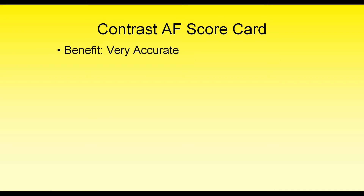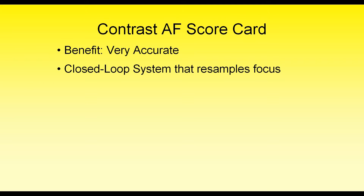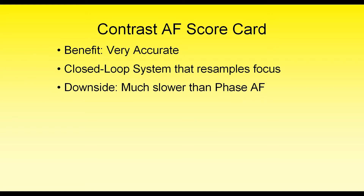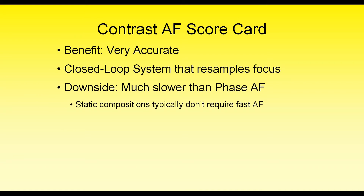With contrast focus, you'll almost always get perfectly nailed focus provided you have adequate lighting, because it's a closed-loop system where the camera constantly resamples until contrast is at its maximum point — typically where focus is at its best. The downside is that it's much slower than the legacy phase-detect system available outside of live view. However, in live view you're typically doing static compositions, so the extra time needed for precise focus is not a big deal.